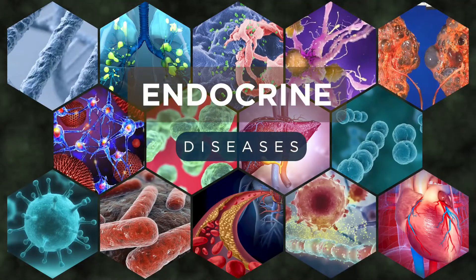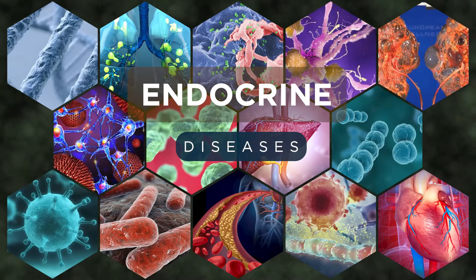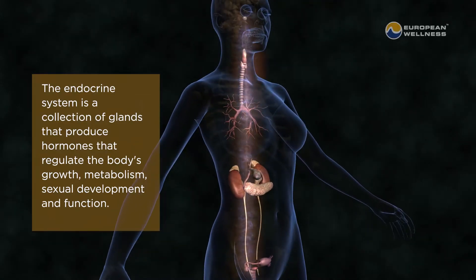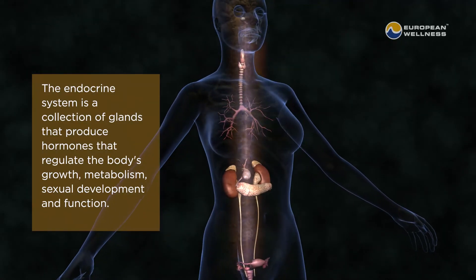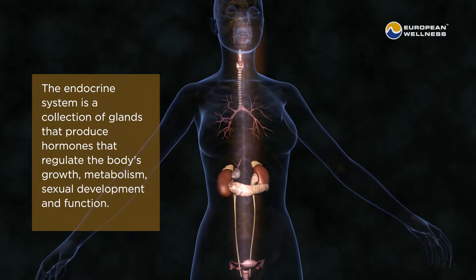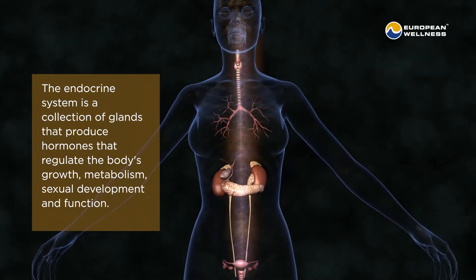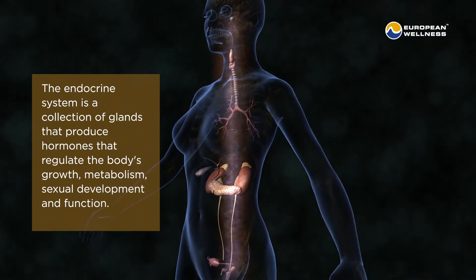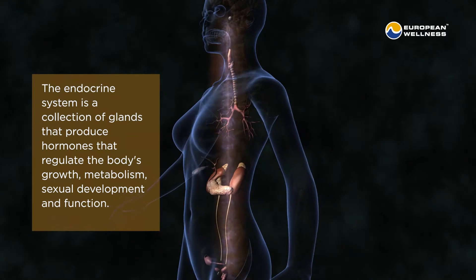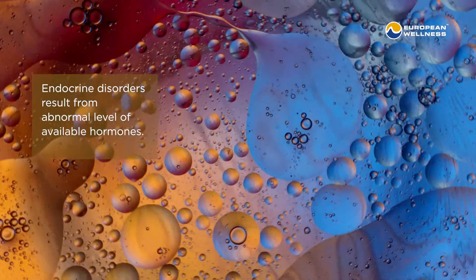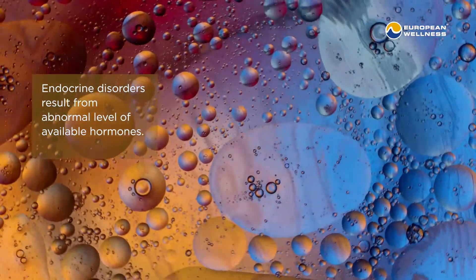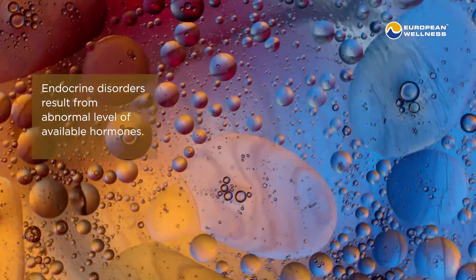Endocrine Diseases. The endocrine system is a collection of glands that produce hormones that regulate the body's growth, metabolism, sexual development, and function. Endocrine disorders result from abnormal levels of available hormones.